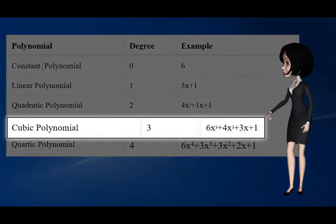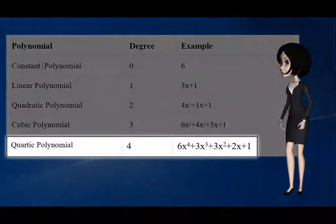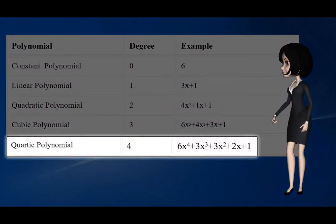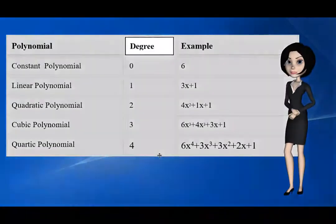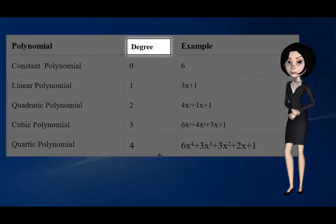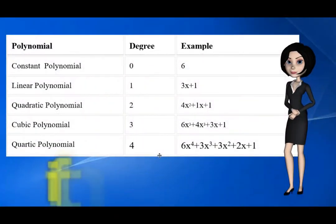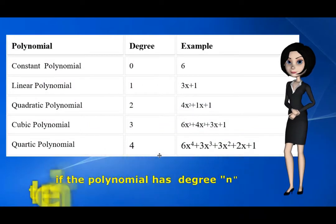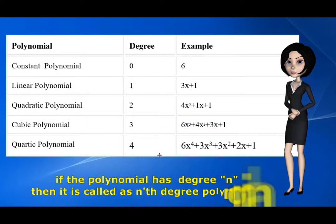If the degree of the polynomial is 3, then it is called a cubic polynomial. If the degree of the polynomial is 4, then it is called a quartic polynomial. These are all classified based on their degree. If the polynomial has n as degree, then it is called an nth degree polynomial.